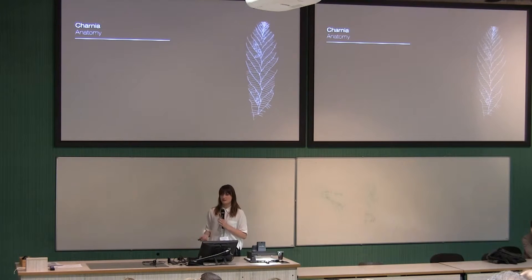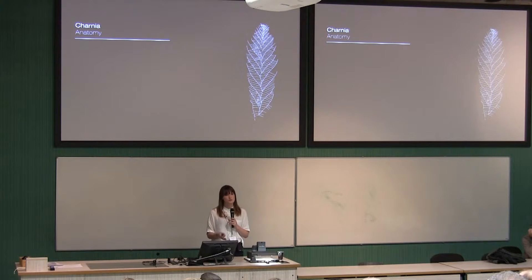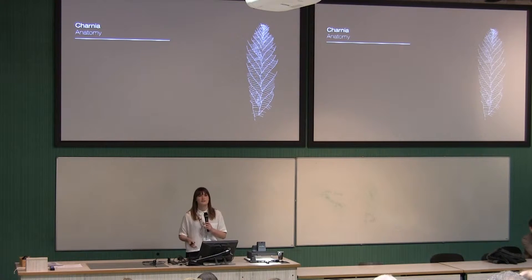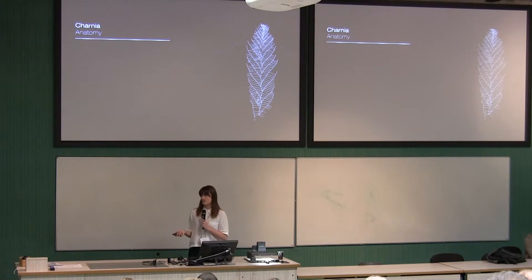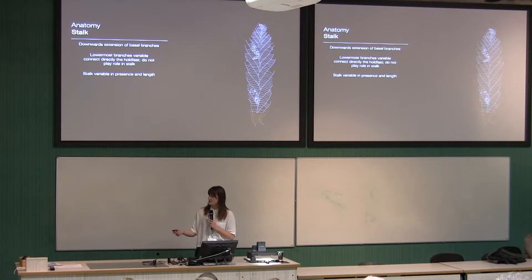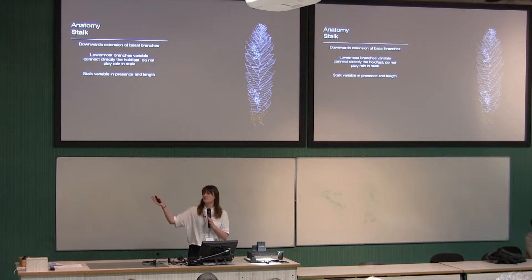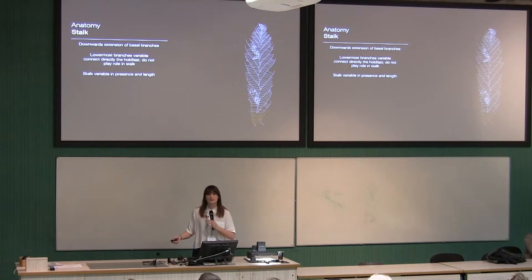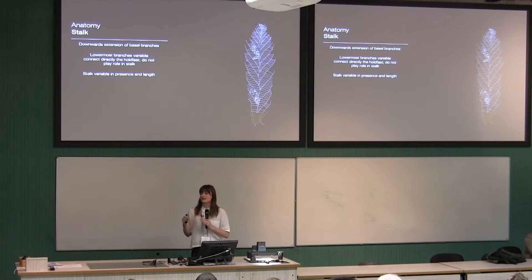When Charnia was initially described by Ford in 1958, it was considered to have a frond, a holdfast, and a stalk. But because Ford initially conflated Charnia with a potentially distantly related taxon, Charnia discus, this has gone by the wayside. One of the first things we're doing is redescribing the stalk — an informal term for a stalk region, which is a basal extension of some branches. These are not the basal-most branches. Stalks are very sporadically preserved, but where present they appear to join directly to the holdfast and do not join the midline of the organism as all other primary branches do.